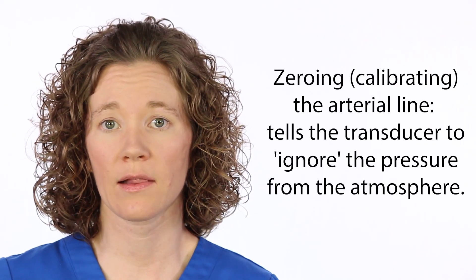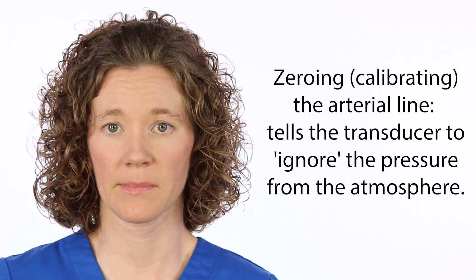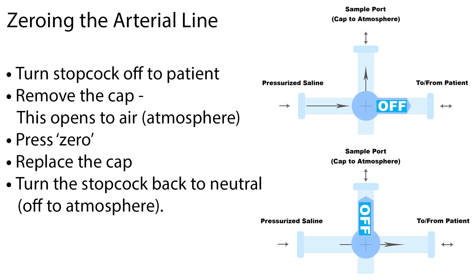Along with understanding waveforms, the nurse is responsible for zeroing or calibrating the arterial line. Zeroing the system tells the transducer to ignore the pressure from the atmosphere. First, ensure the transducer pressure tubing and flush solution are assembled correctly and free of air bubbles. Place the transducer at the level of the right atrium, called the phlebostatic axis. Turn the stopcock off to the patient and remove the cap — this opens to air or atmosphere. Press zero to set the atmospheric pressure to a zero reference point, then replace the cap and turn the stopcock back to neutral, off to the atmosphere.